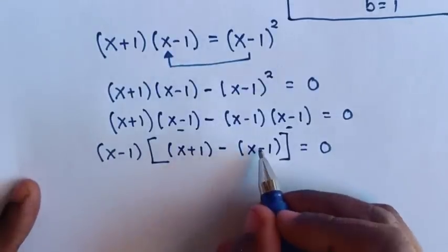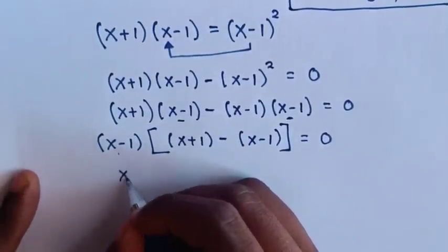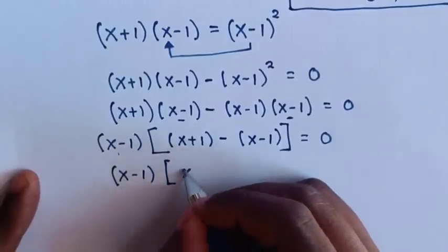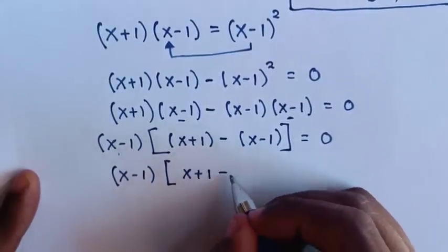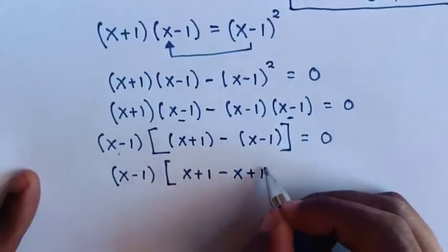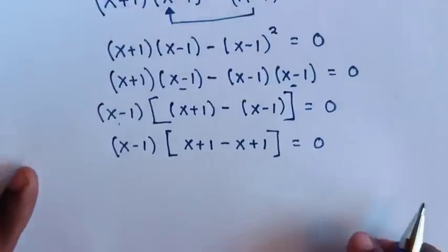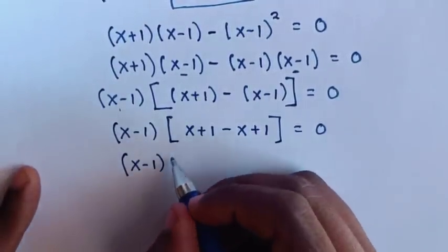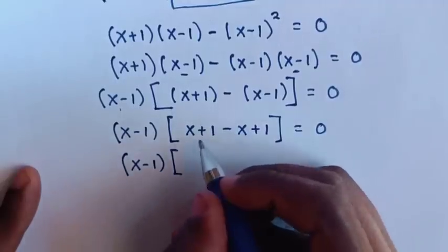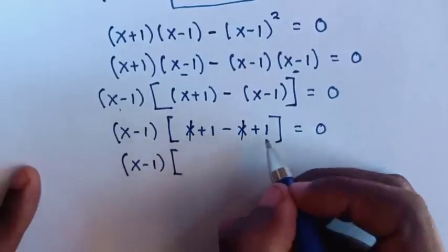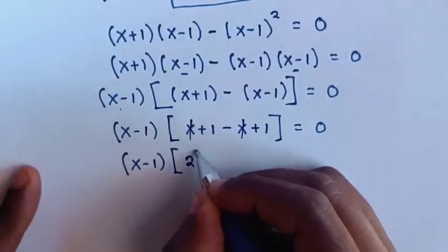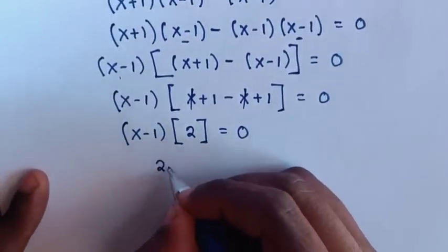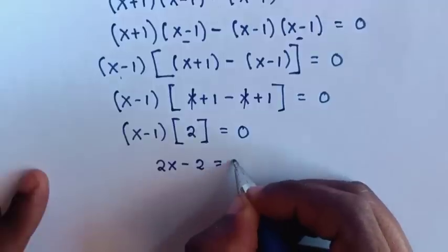Then we take the negative inside the bracket. So our equation will be (x minus 1) times [(x plus 1) minus (x minus 1)]. The x minus x cancels, and 1 plus 1 is 2, so this equals 0. Then we multiply the 2 in, so it will be 2x minus 2 is equal to 0.